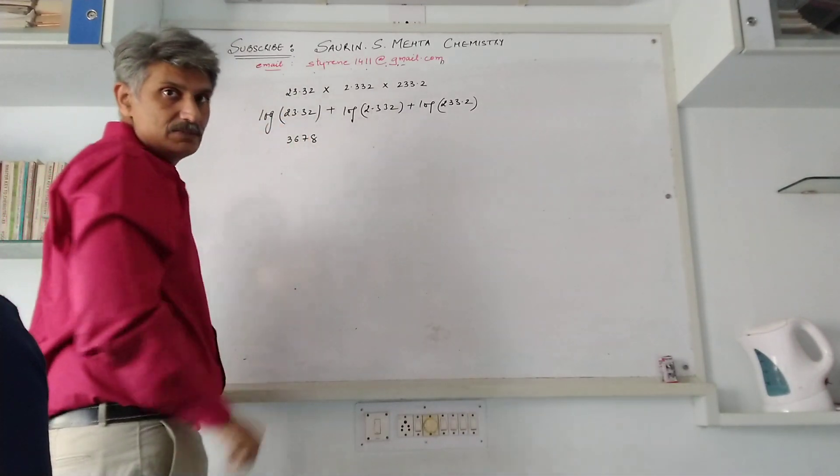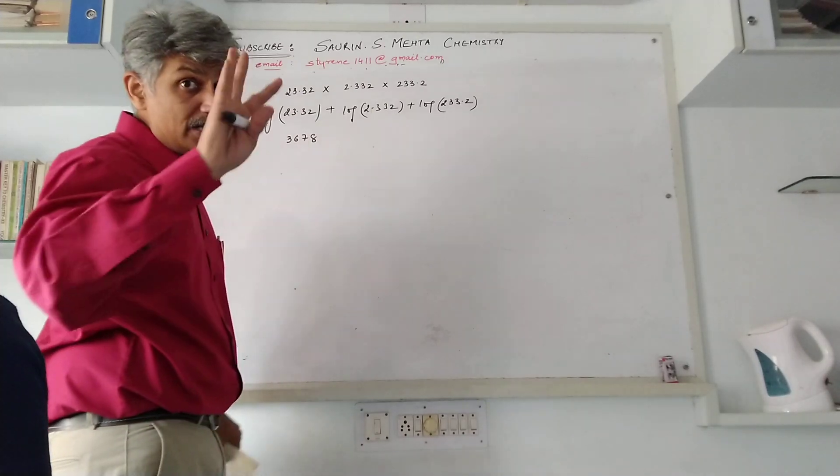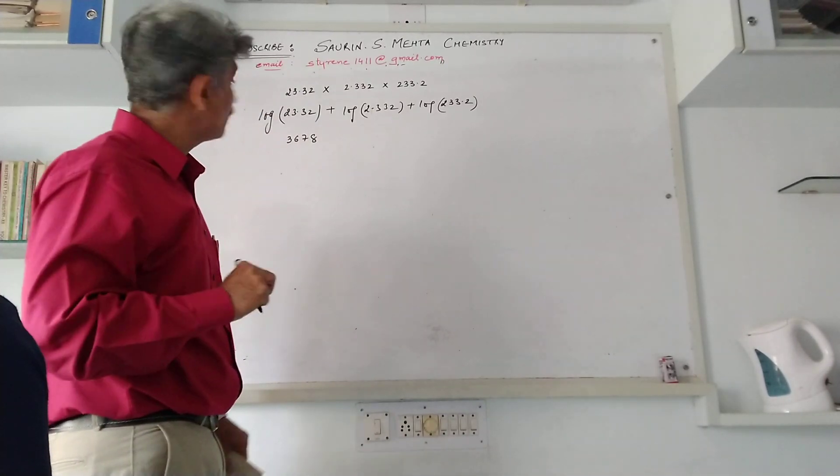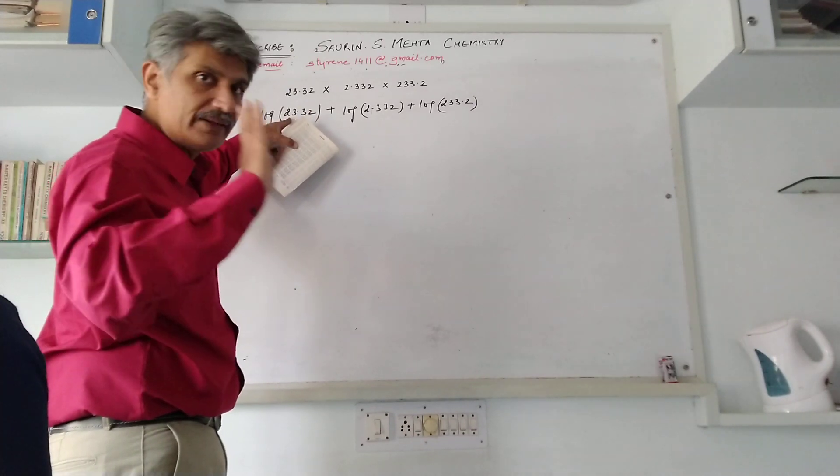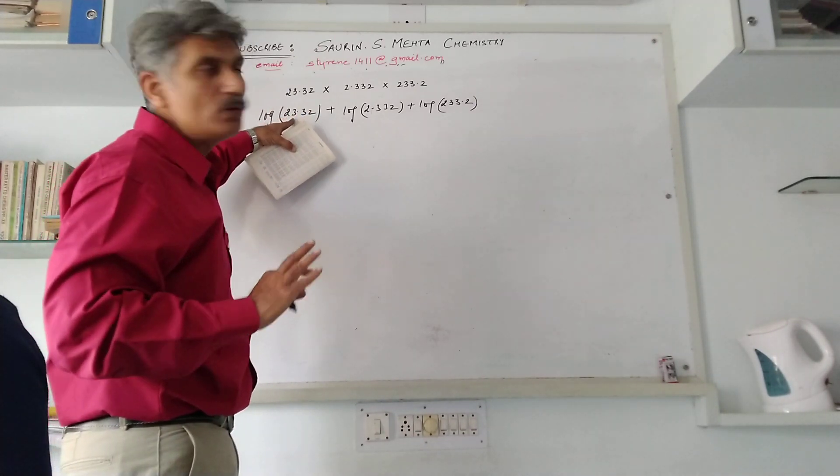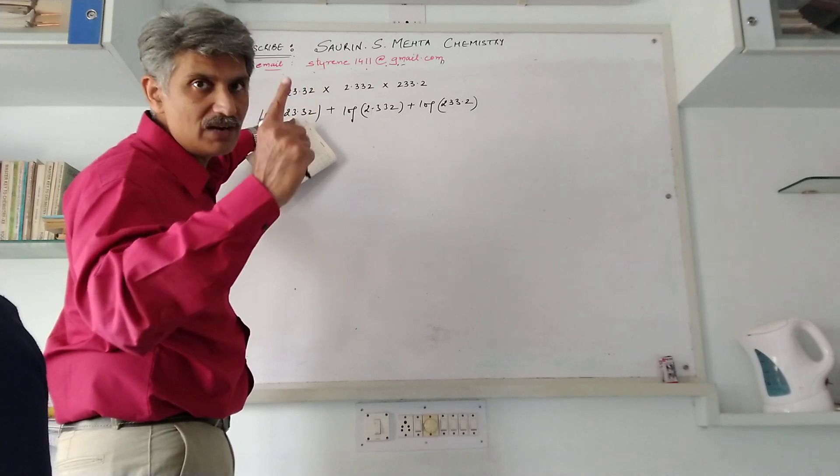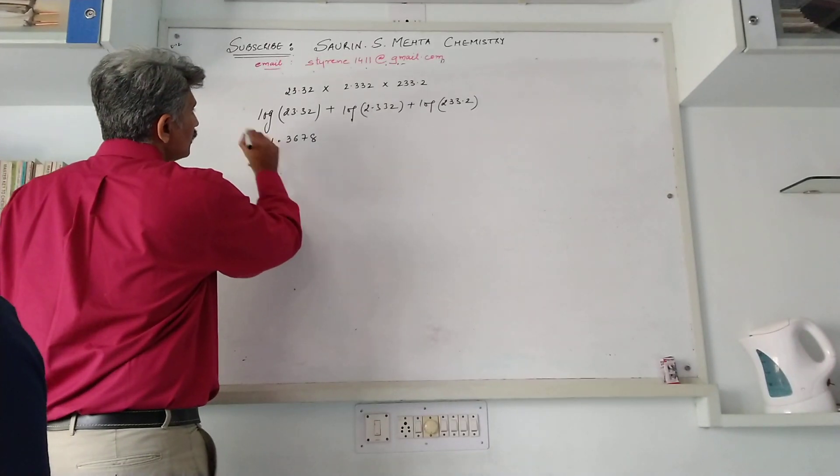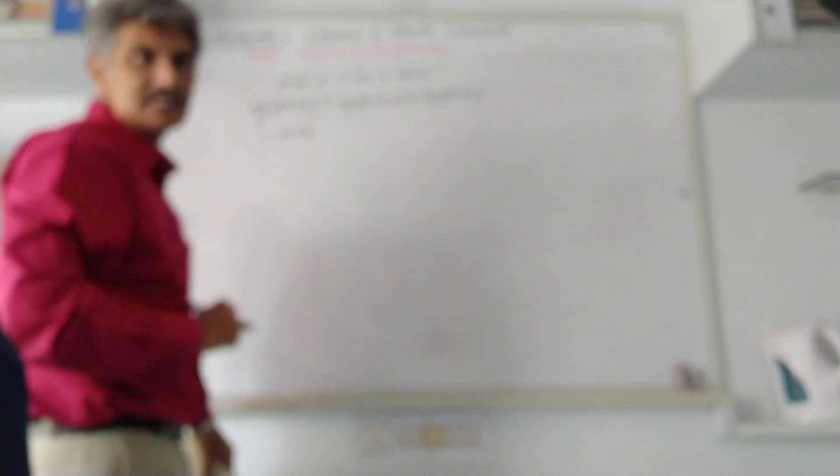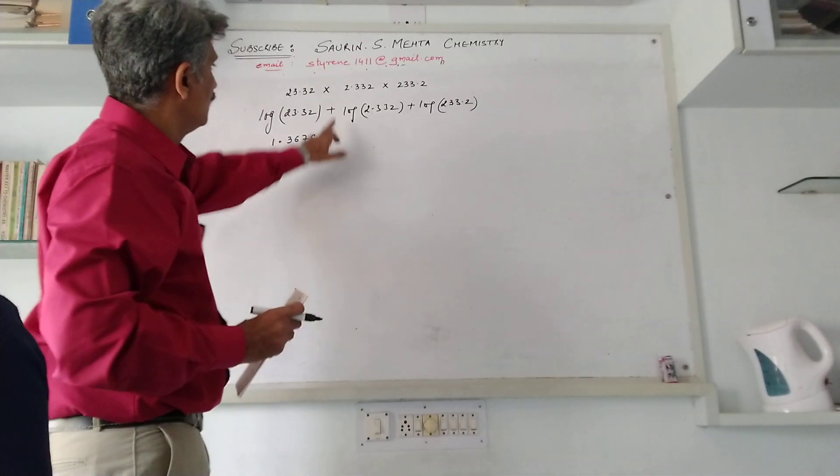Now how many digits are present before the decimal? There are two. According to the logarithmic protocol, when the number of digits are whatever they are, subtract one from that. So you have two digits, subtract one, and that will be one. So the value of this is 1.3678.